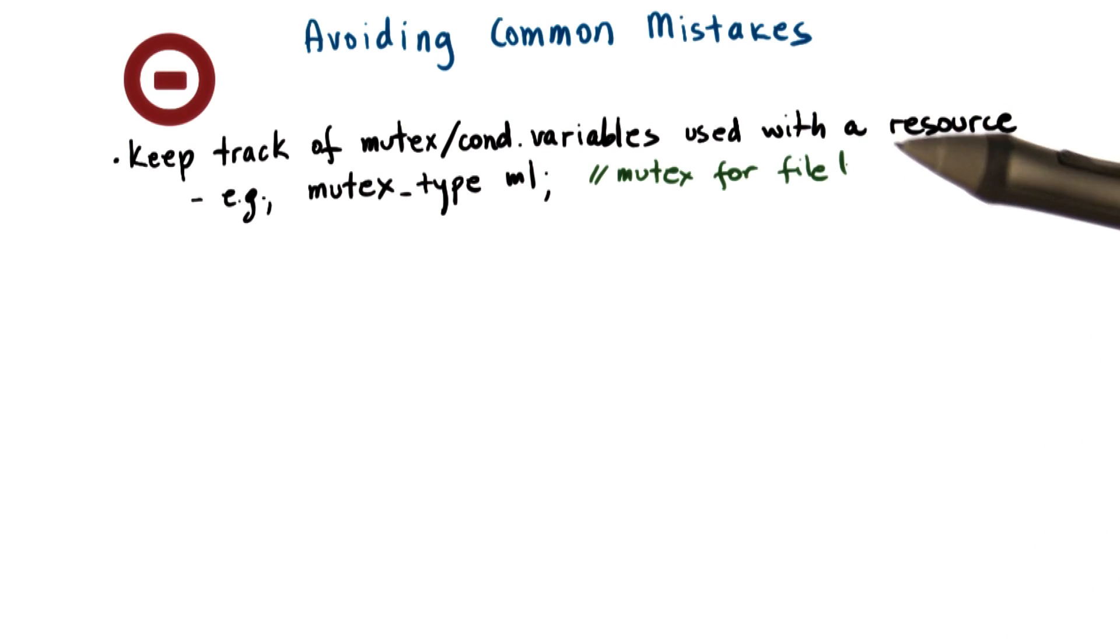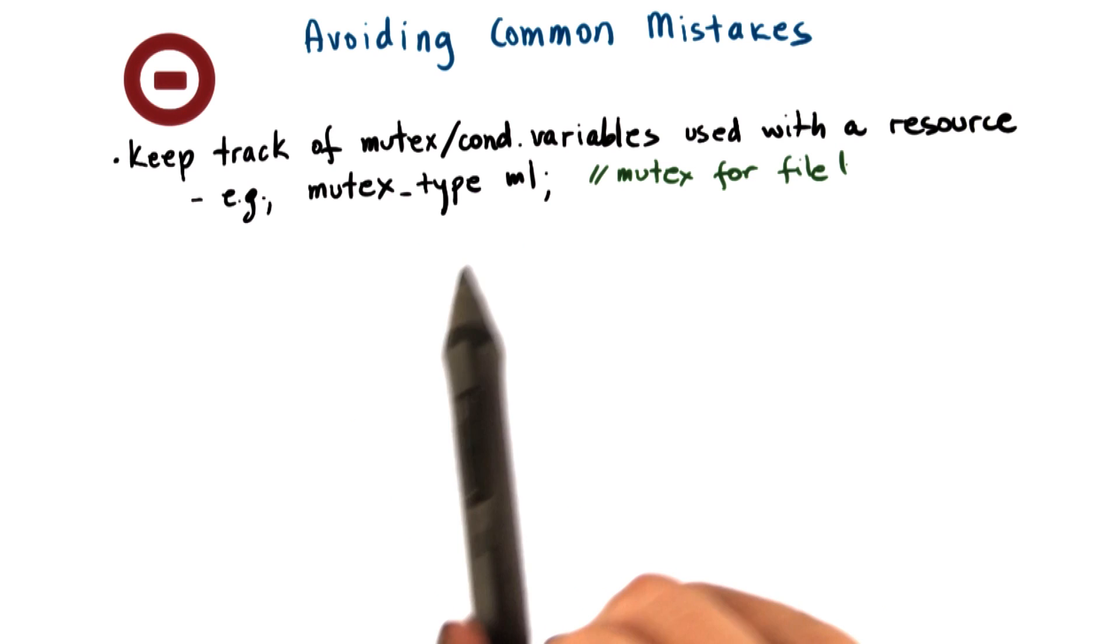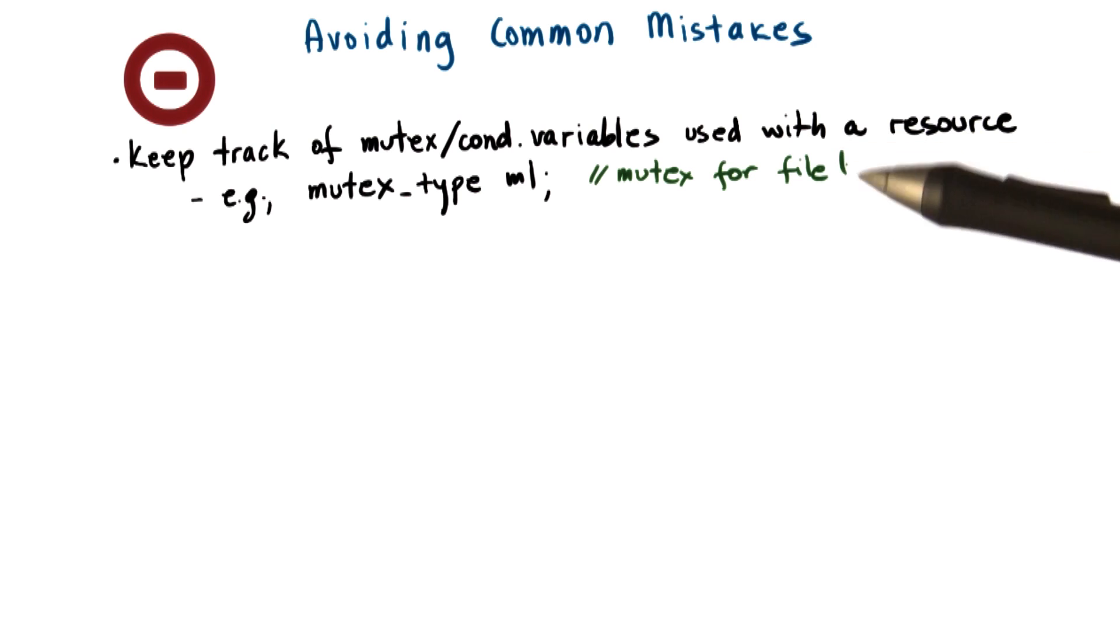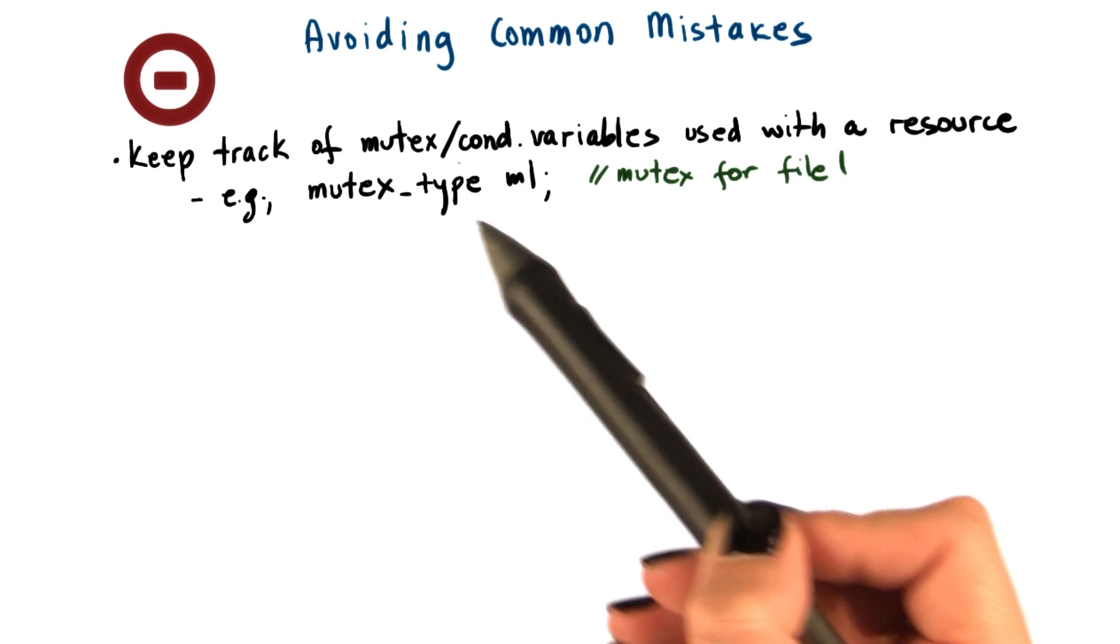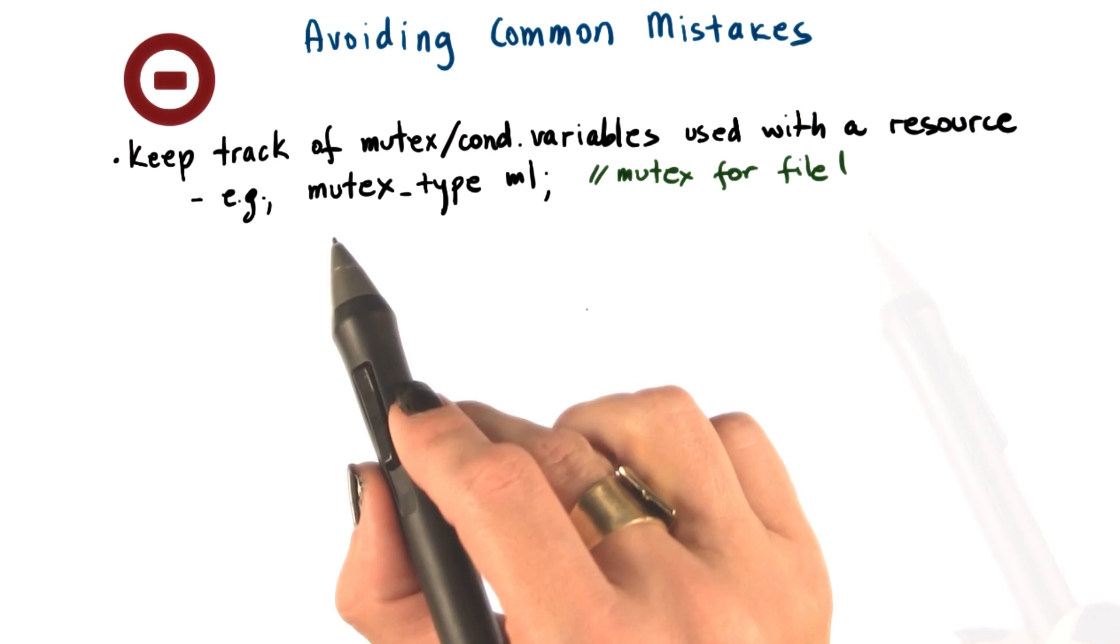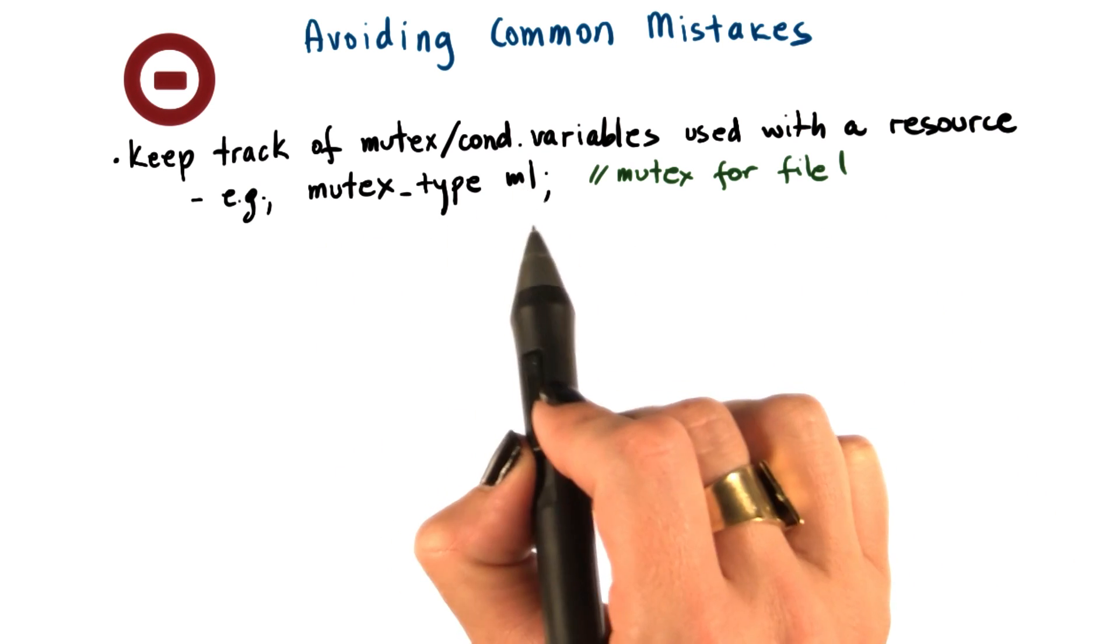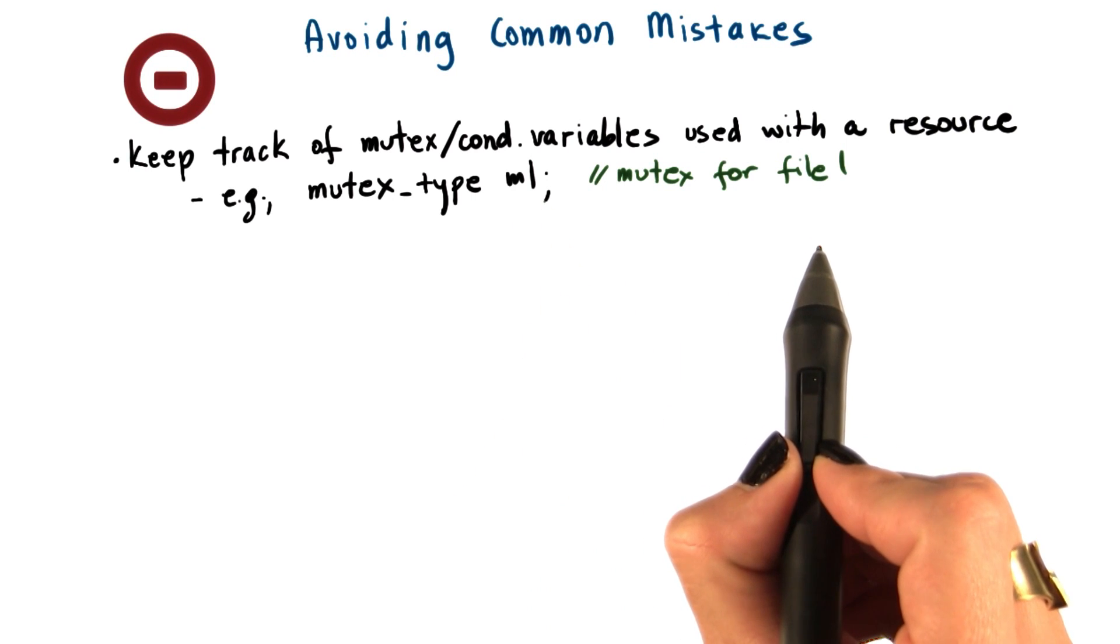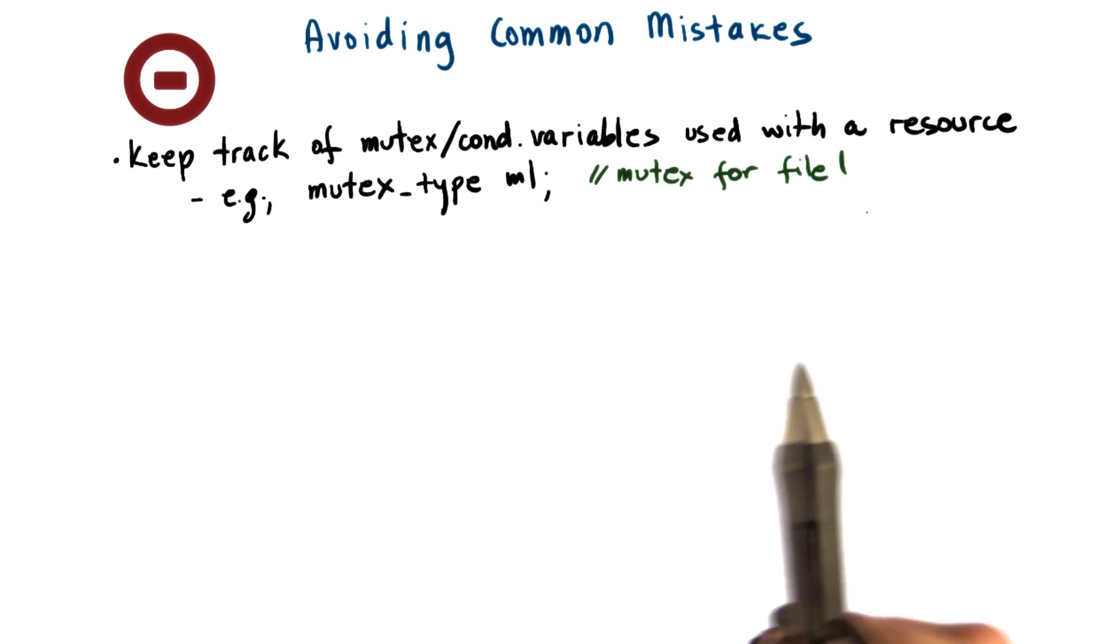What that means, for instance, is that when defining these variables, make sure to write immediately a comment: which shared resource, which operation, which other piece of shared state do you want this synchronization variable to be used with? For instance, you're creating a mutex m1 and you want to use it to protect the state of a file, file 1.